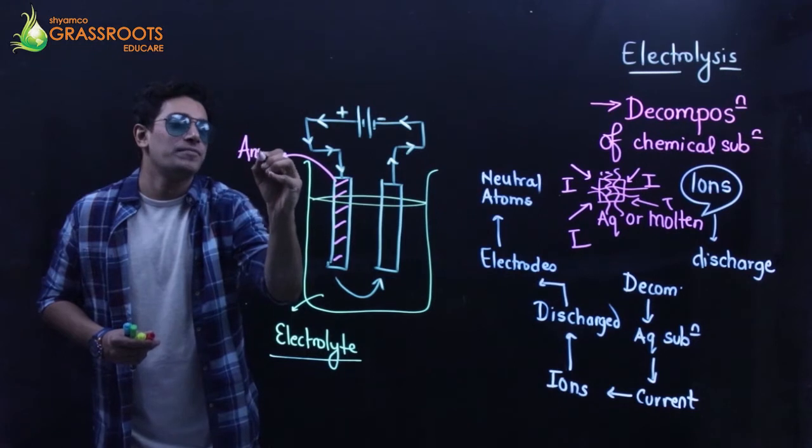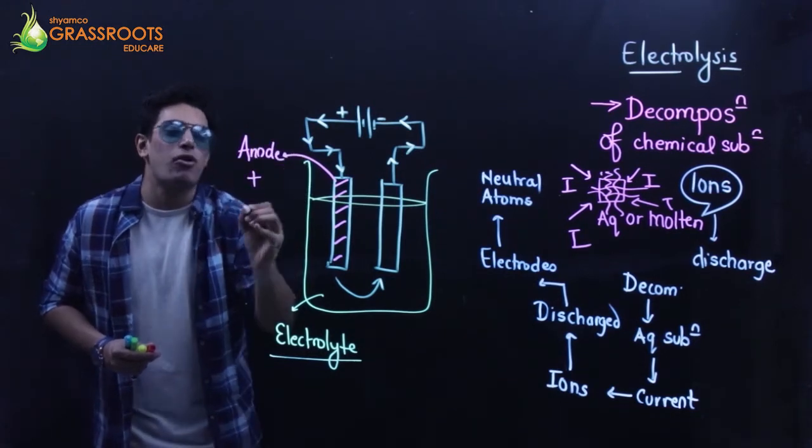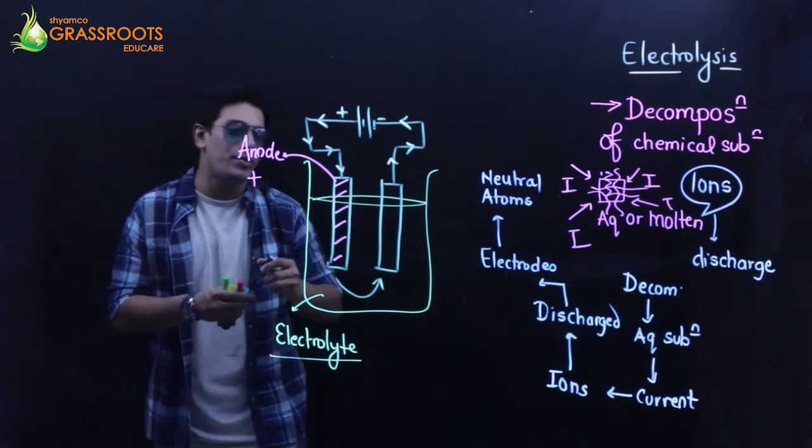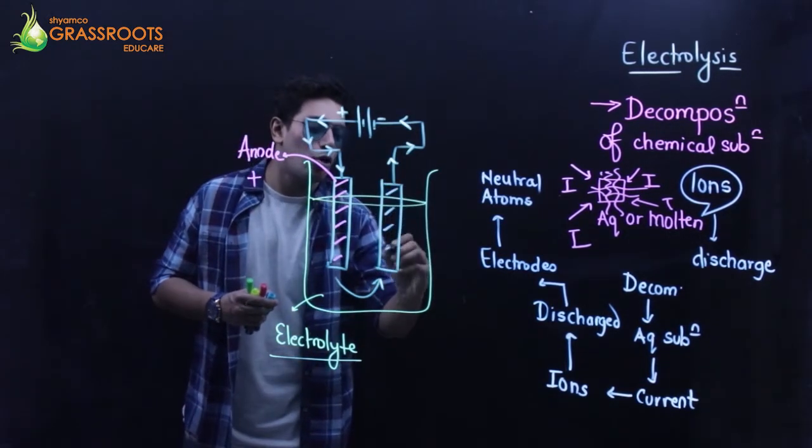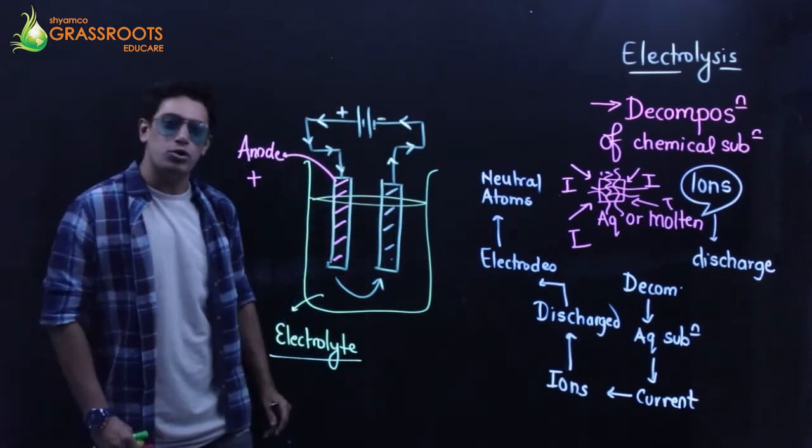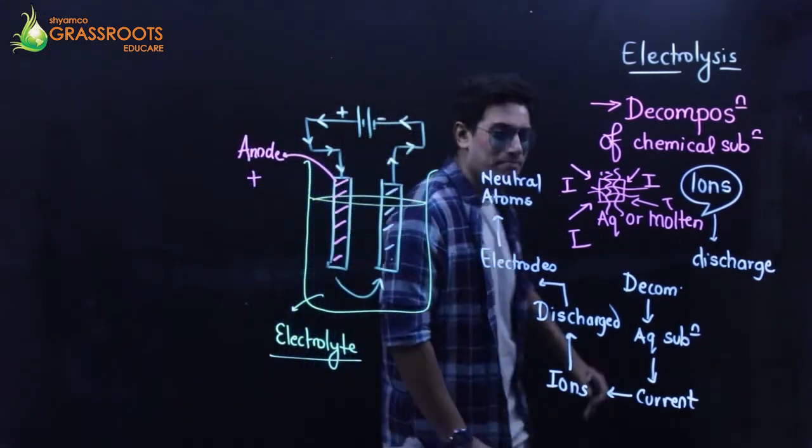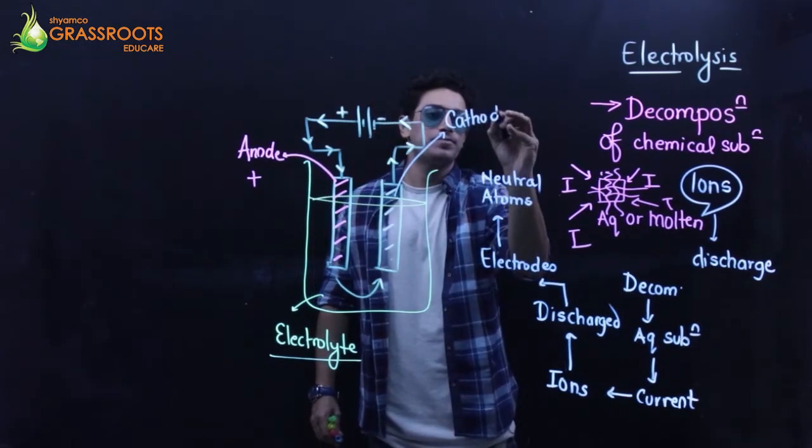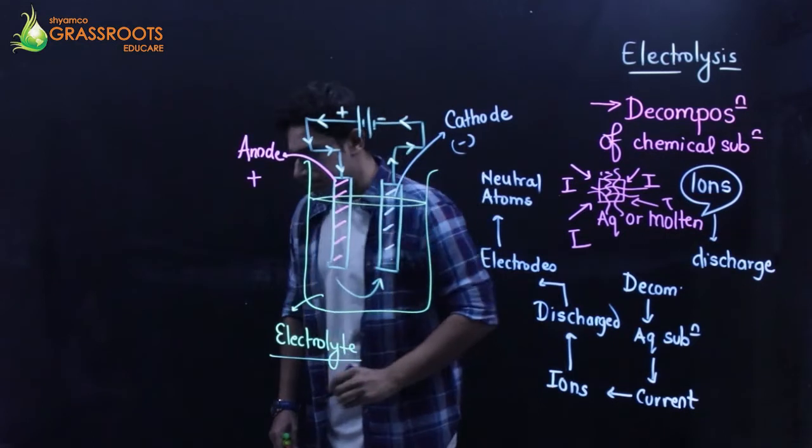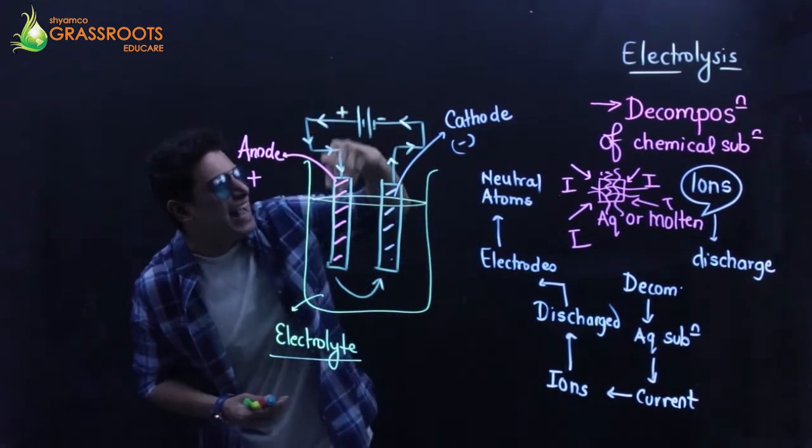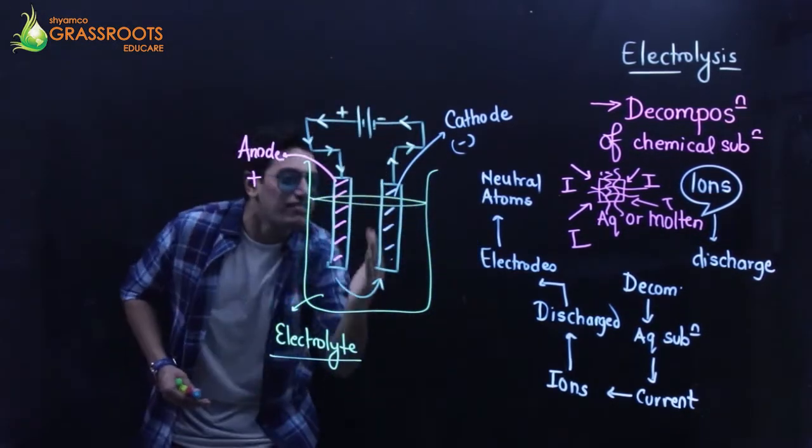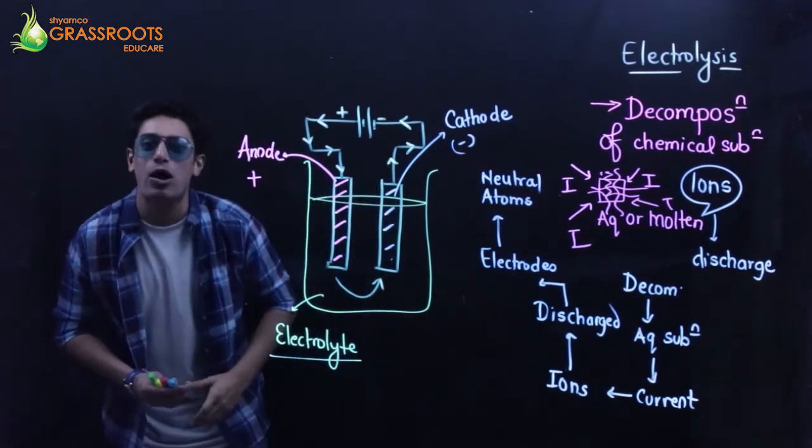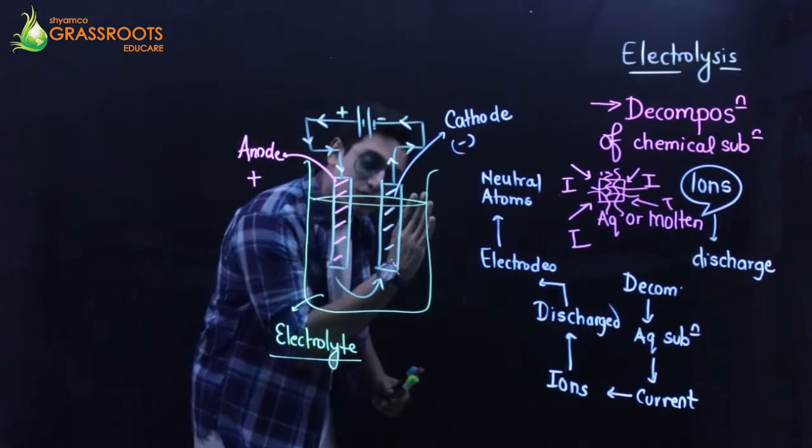The rod which is connected - this one, let me paint it pink red - is called anode because it is a positive electrode. This one I'll paint blue - this is cathode, negative electrode. We'll maintain color combinations: cathode will be blue, anode will be red. The current enters from the anode and exits from the cathode.